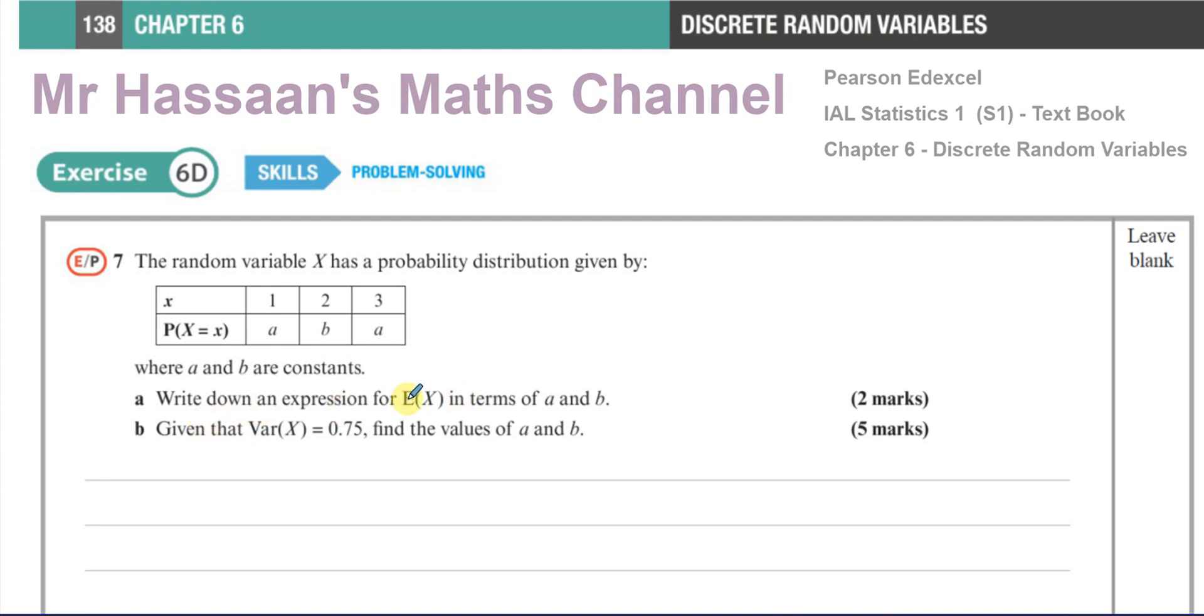Write down an expression for the expected value of X in terms of a and b. So E(X) is basically the mean or the expected value, which is found similarly to how you'd find the mean when you are using a frequency table. You multiply X by its probability. So it's 1 times a, plus 2 times b, plus 3 times a. That's going to give you 4a plus 2b. So that's E(X) in terms of a and b.